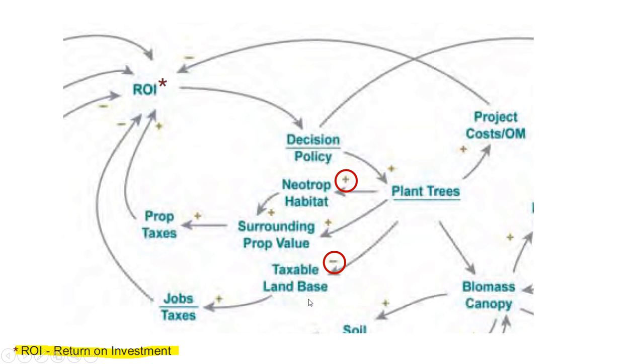The plus and minus signs just show us what relationship we know. Planting trees affects both habitat and taxable land base, but in this case these two vary in the same direction, while plant trees and taxable land base vary in opposite directions. We also have an abbreviation here, ROI, which stands for return on investment.